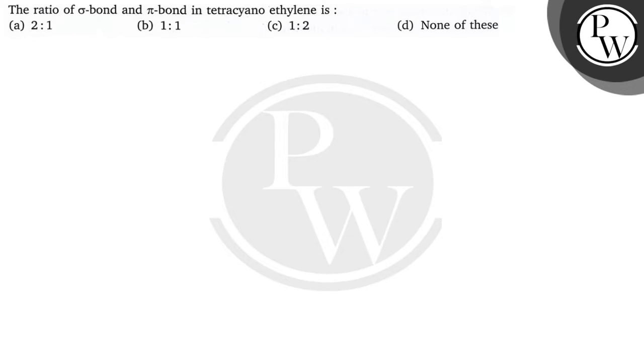Hello bachchow, let's see, question kya kata hai? The question says, the ratio of sigma bond and pi bond in tetracyanoethylene is 2 is to 1, 1 is to 1, 1 is to 2, and none of these. So, let's do the question.